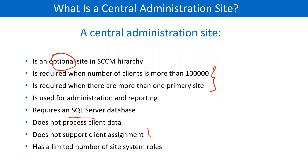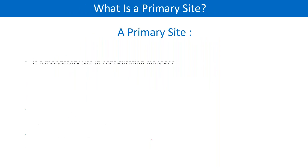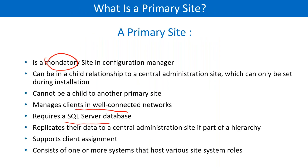Secondary site needs SQL Server database but does not support client assignment. We also talked about capabilities: central administration site supports 700,000 devices, primary site supports 100,000, and secondary site supports 5,000. We have three diagrams — one for a small-sized company, second for medium-sized, and third for big-sized companies.